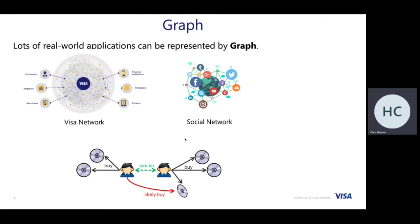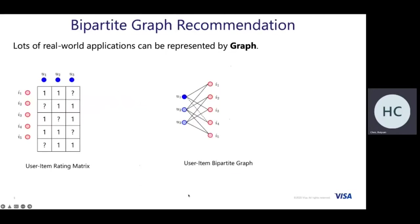Another very common case is recommendation systems, where we have users and items and the relationship between them can be represented by a bipartite graph. In bipartite recommendation systems, we have users and items which can be represented by a user-item rating matrix.